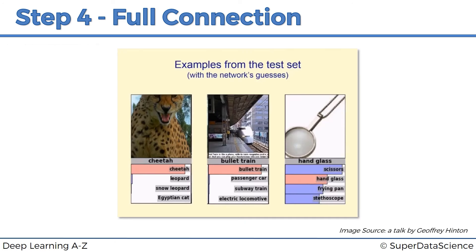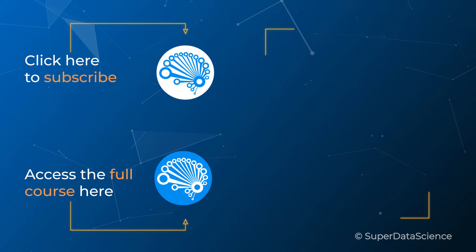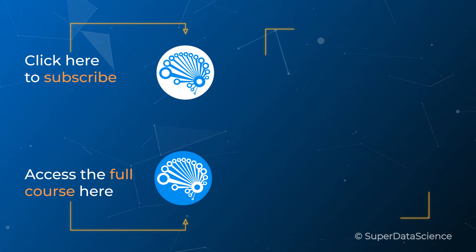That's how you get images like this, where you have a cheetah with a high probability class. The small probabilities for other classes still exist because neurons for leopard or other categories are also listening to their voters and might say 'maybe it's a leopard.' Another example shows scissors winning the classification, but hand gloss was very close as second, and frying pan and stethoscope also appear because those neurons listened to their voters and had some outcome. Make sure to check out the videos on the right or the full course in the description to continue your learning.